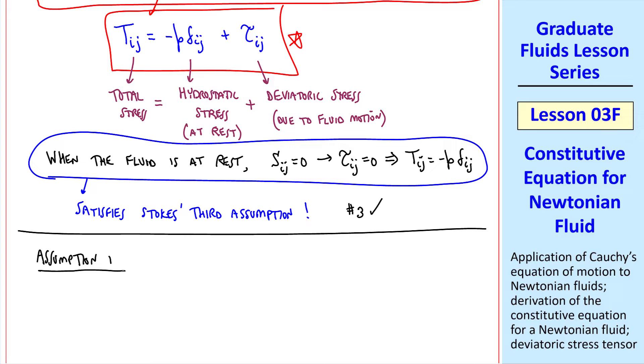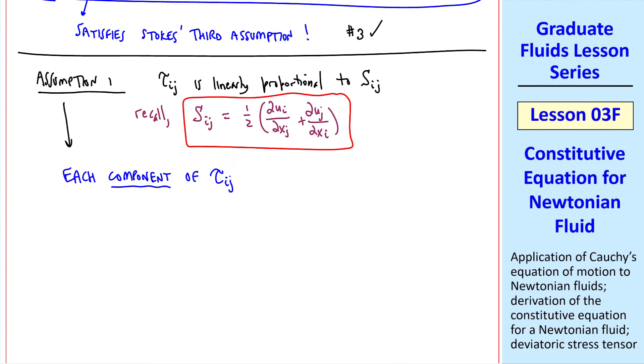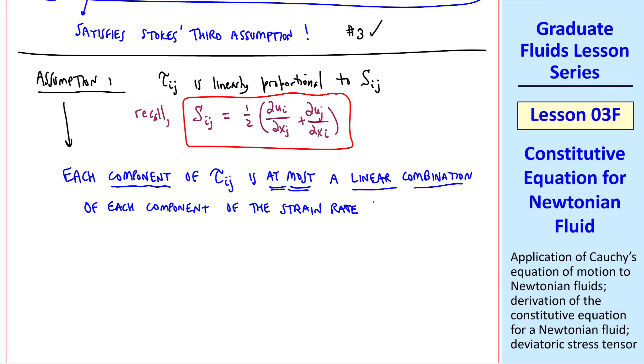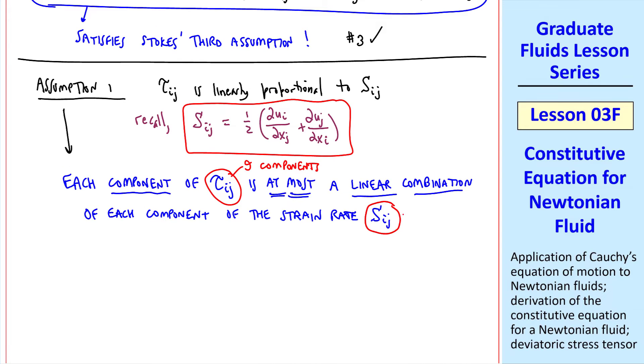Let's look at assumption one more closely. Tauij is linearly proportional to Sij. And recall, we define the strain rate tensor as one-half del ui del xj plus del uj del xi in tensor notation. What does this mean mathematically? It means that each component of tauij is, at most, a linear combination of each component of the strain rate. Well, how many components are we talking about? Tauij has nine components, since it's a second-order tensor. And Sij also has nine components.